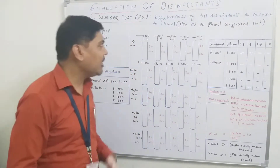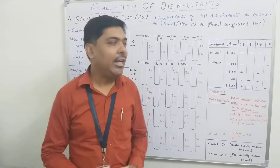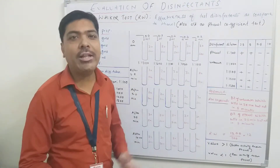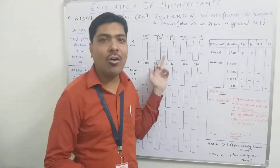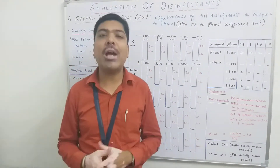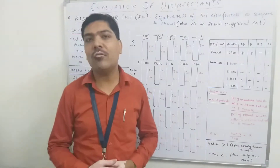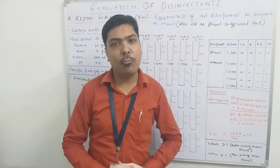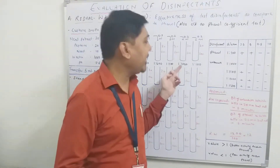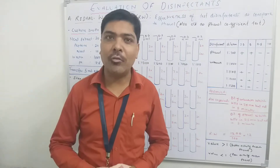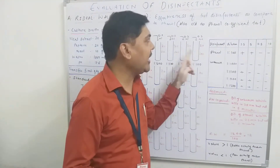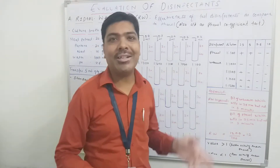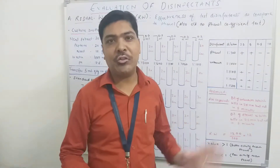After 30 seconds, we add 0.2 ml of Salmonella Typhi culture into the next tube at 1:1200 of the unknown. Then we wait 30 seconds and add 0.2 ml culture into the third tube at 1:1100 dilution. After another 30 seconds, we add 0.2 ml into the 1:1000 tube. Then after 30 seconds, we add 0.2 ml of Salmonella Typhi culture into the phenol tube containing the 1:100 dilution.